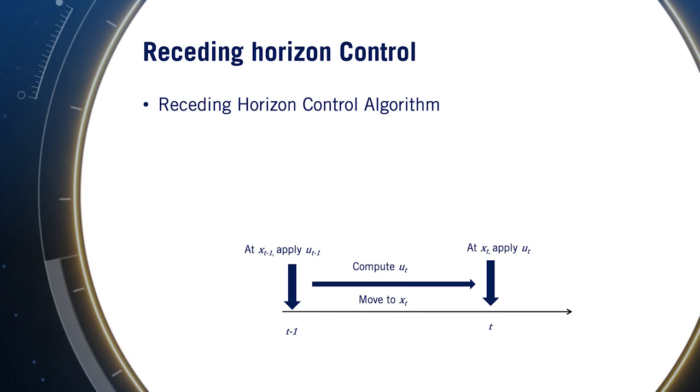Before we start designing MPC controllers, let's take a closer look at the concept of receding horizon. Receding horizon control solves a fixed size optimization at each time step, which identifies optimal control inputs to apply from the current time to the end of the horizon, based on the objectives, constraints, and current state of the vehicle.